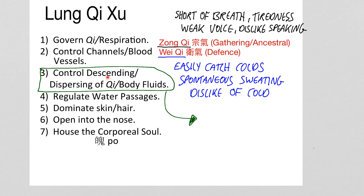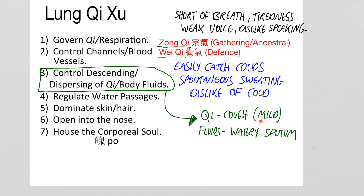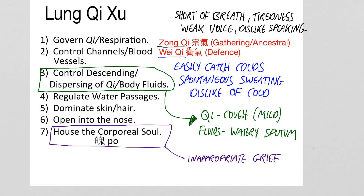Because the lungs control the descending and dispersing of qi and body fluids, if the lung qi is weak, the qi doesn't descend and there's a mild cough, and the fluids don't descend and there's watery sputum. We might also get inappropriate grief.